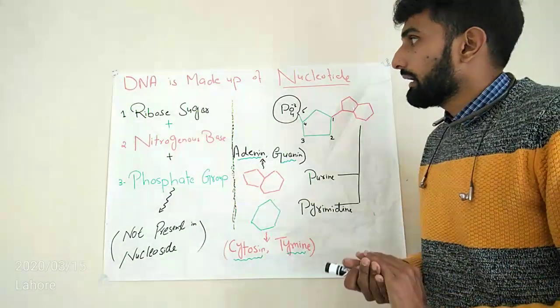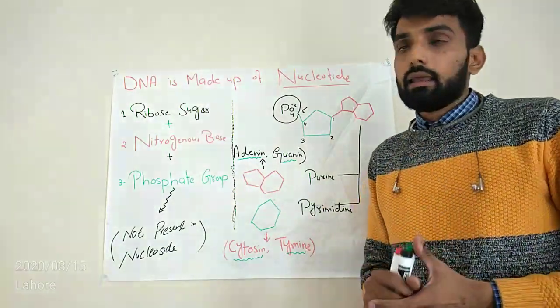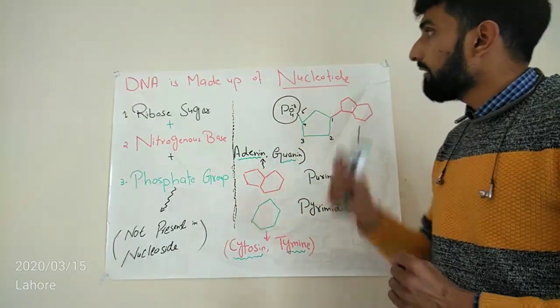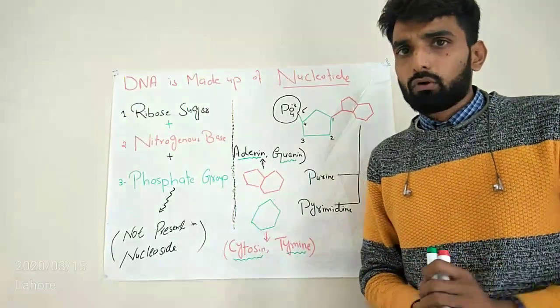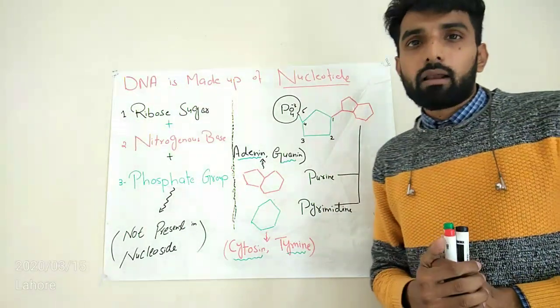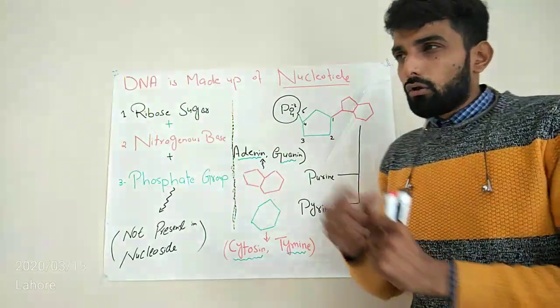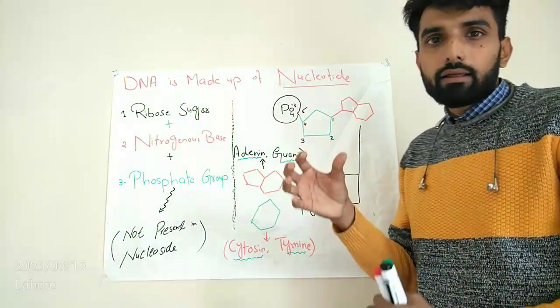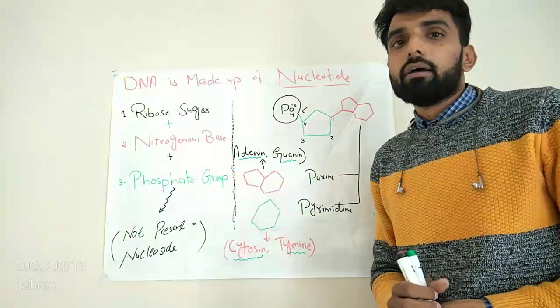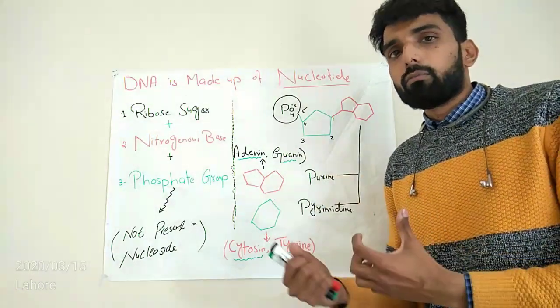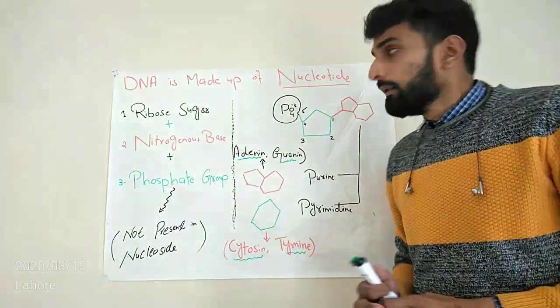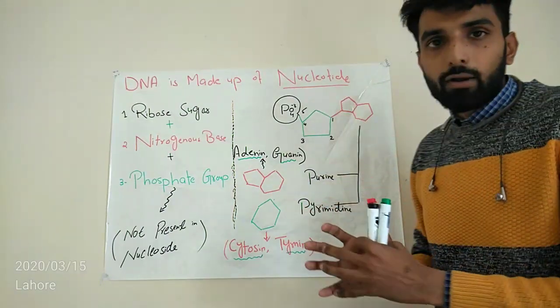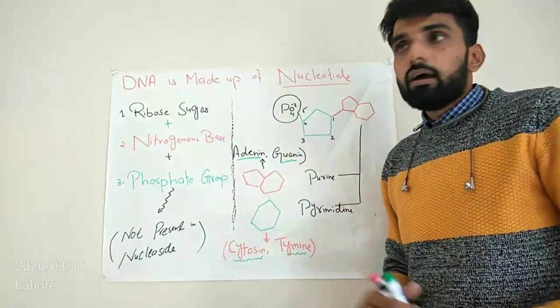So first of all, let's start with the structure of DNA. As we know that DNA is made up of nucleotides. Nucleotide is basically a monomer of DNA. Lots of nucleotides joined together by a phosphodiester bond. What is phosphodiester bond and how it is made, I will explain in later videos. So when lots of nucleotides are joined together, they form a structure of DNA.